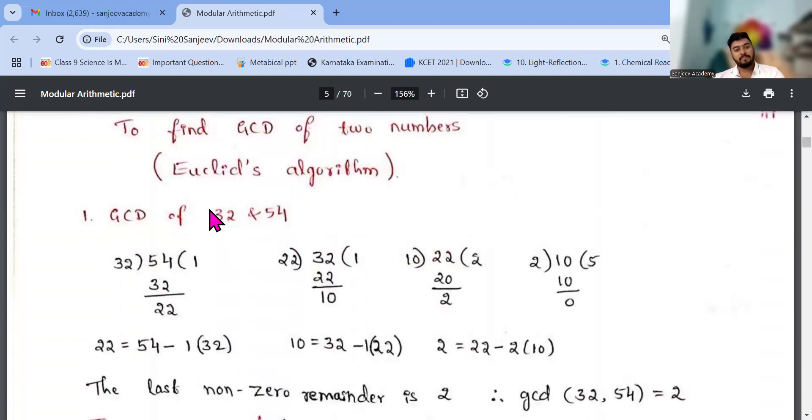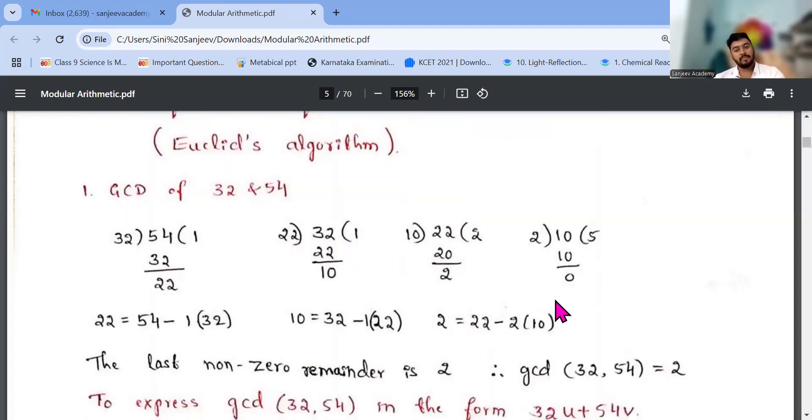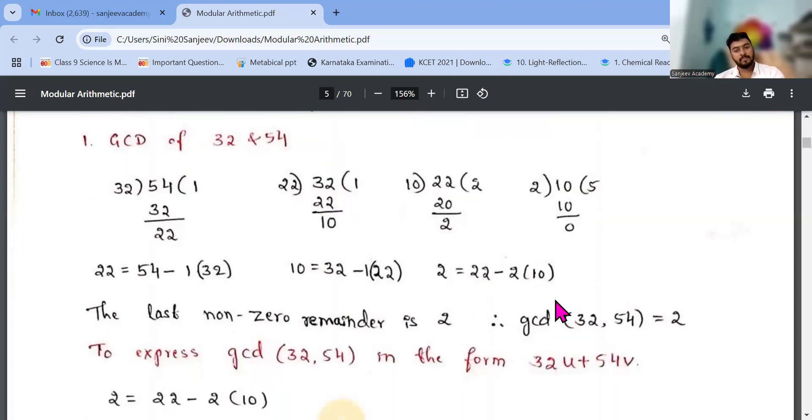Euclid's algorithm, 32 and 54. So 32, 32 and 54, remainder is 22. And this 22 I have to again divide with the divisor. Then I will get remainder, again this till I get zero. So this is Euclid's division. So the last non-zero remainder is 2. So gcd of 32, 54 is 2.